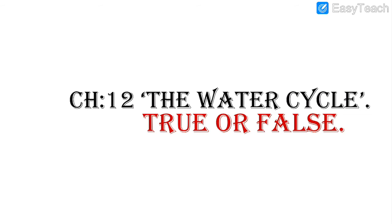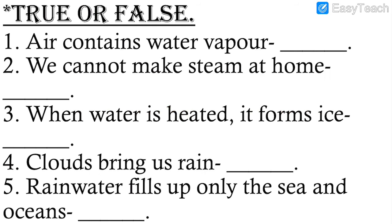Next, chapter number 12, The Water Cycle. In this chapter we had studied about how water changes its form and the water cycle. We had read that water is present all around us, it is even present in air, it rains at some places while it snows at places where it is very cold.